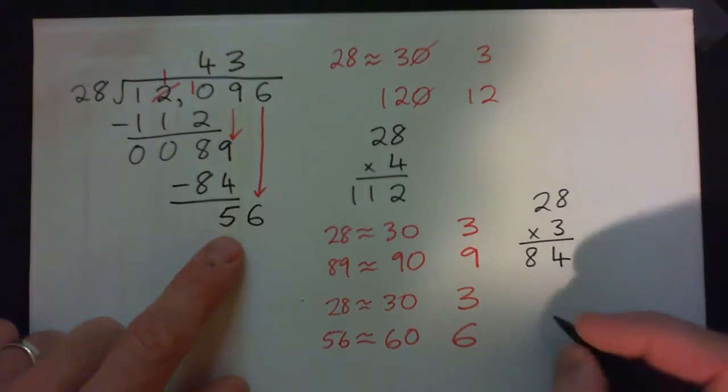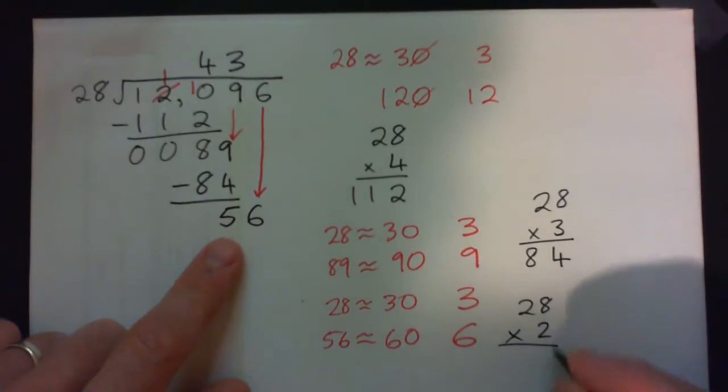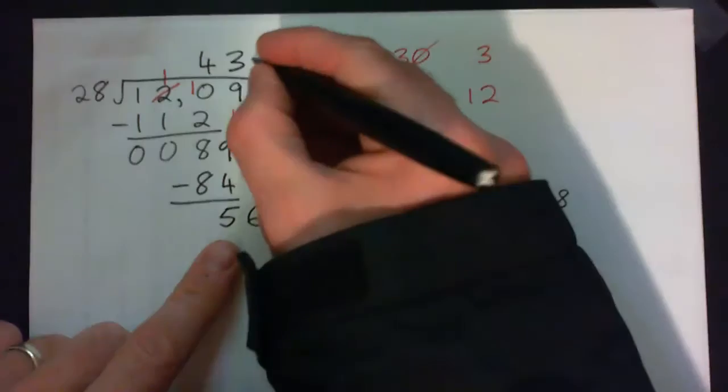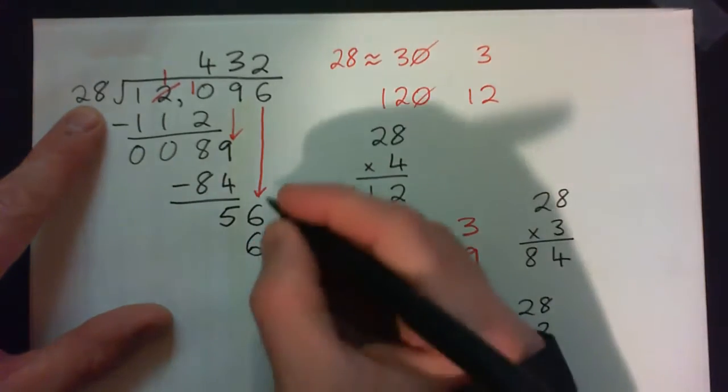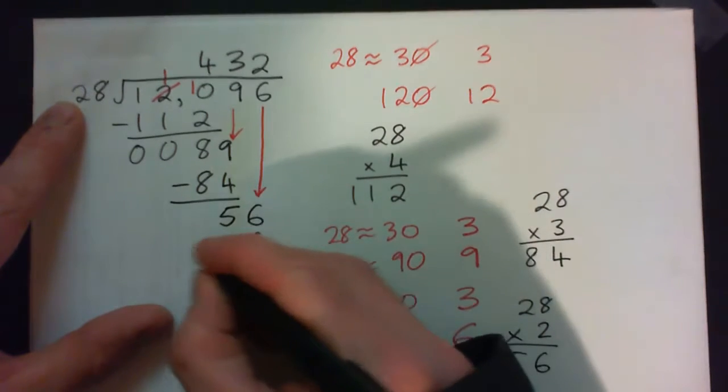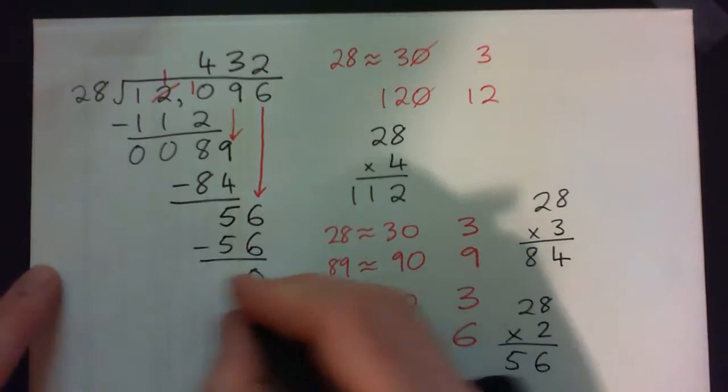2 times. 28 times 2. 2 times 8 is 16, carry the 1. 2 times 2 is 4, and 1 is 5. 56, that worked. Now subtract. 56 minus 56, remainder 0.